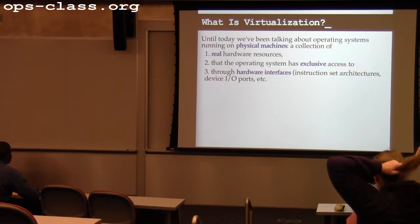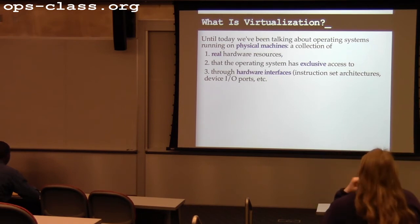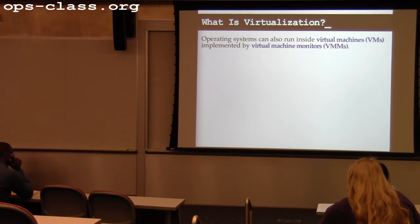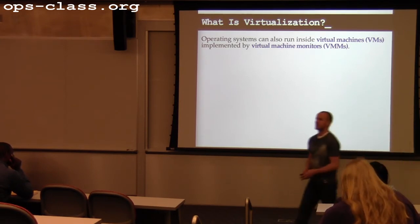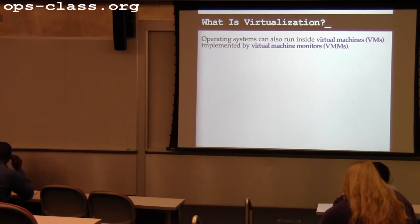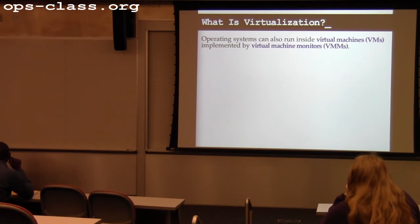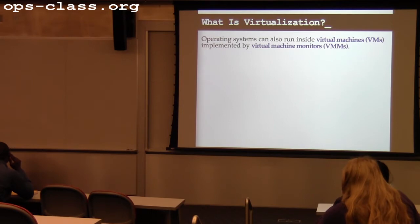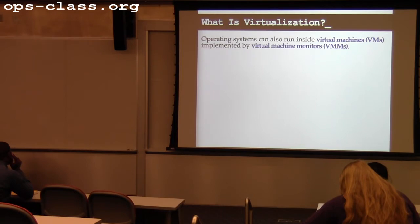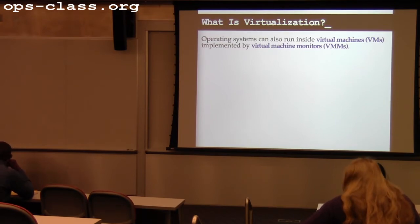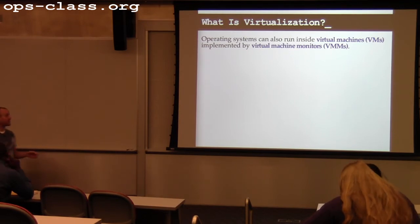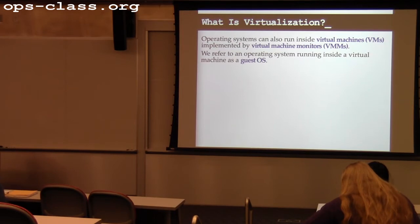Up until now, we've been talking about operating systems that run on real physical machines. But this is less and less common — increasingly, especially with the move to cloud computing and computing as a service, what we do is run systems inside virtual machines. How many people have used EC2? You've all used virtualization technologies for this class. A lot of the computing resources you use today are run inside what's called a virtual machine monitor.